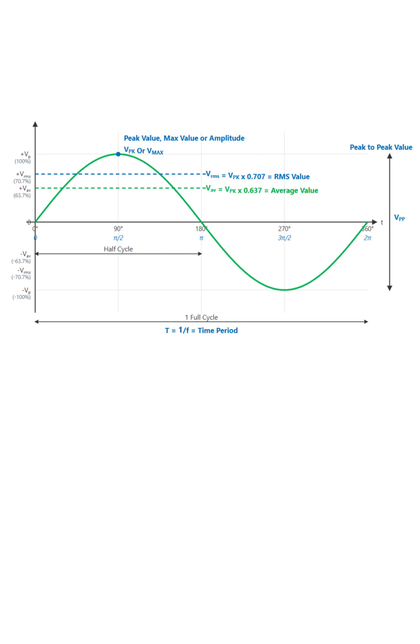Then we have the average value. Now, if you were to average the entire cycle, the positive and negative halves would cancel out, giving you zero.